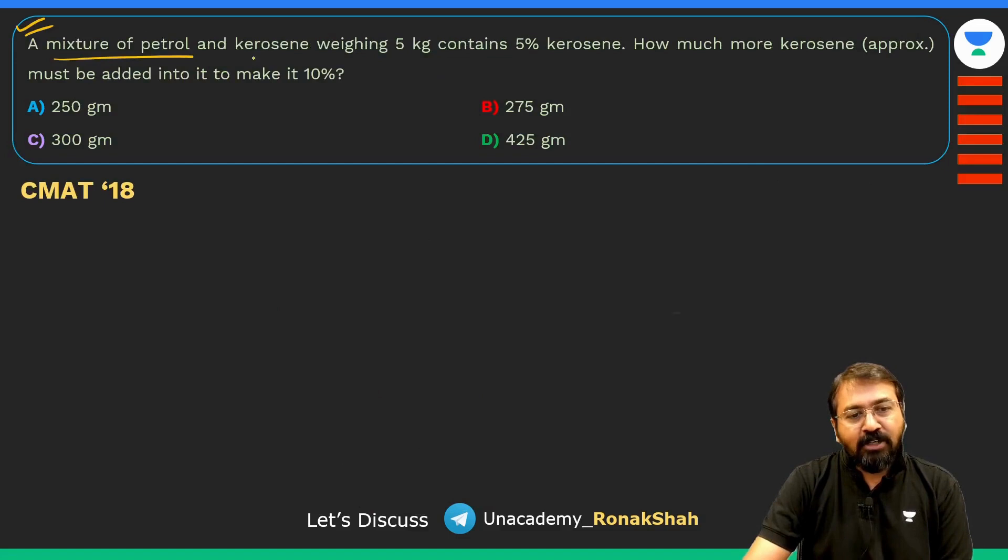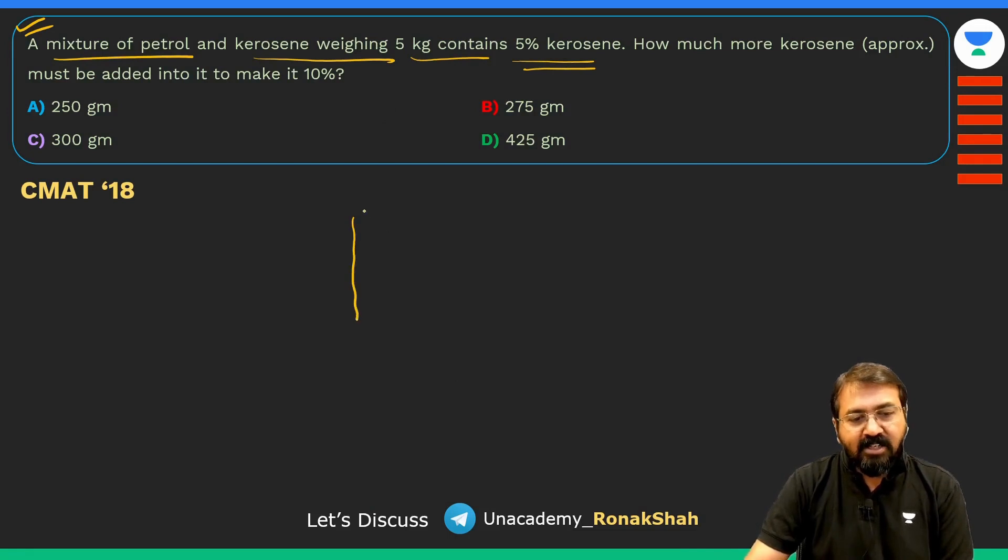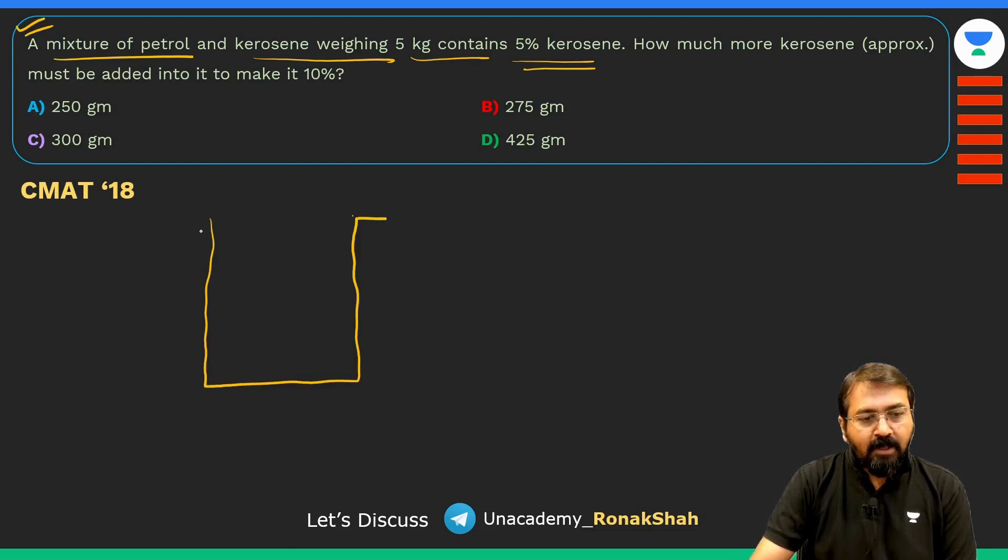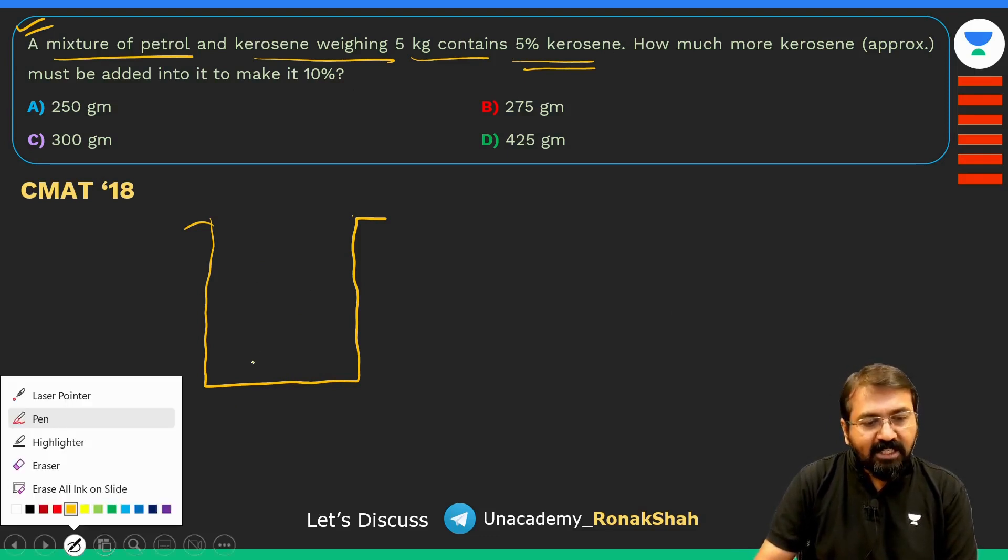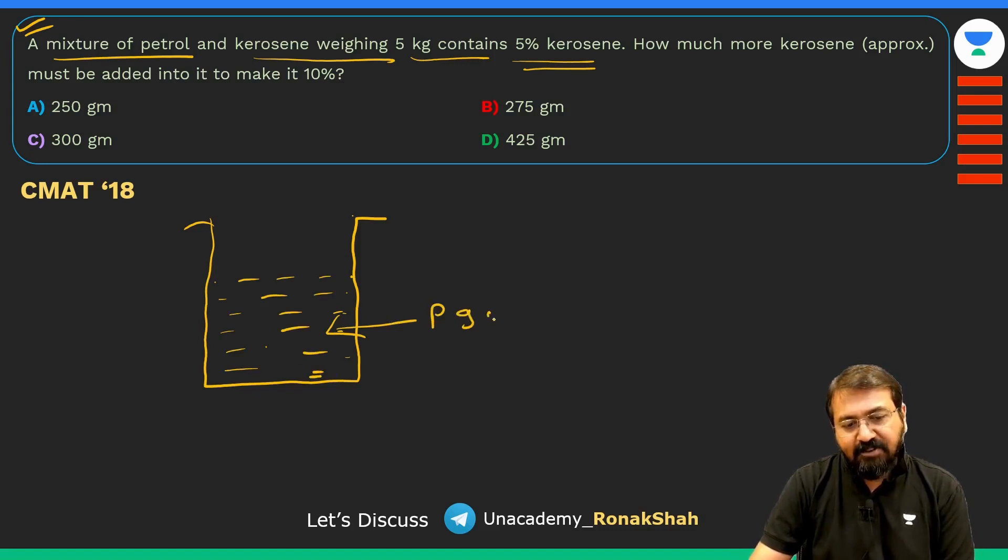Let's take a few more questions. Look at this question: a mixture of petrol and kerosene weighing 5 kg contains 5% kerosene. Let me represent it this way, so this is the container and it has 5% kerosene, so all remaining is petrol. We have 95% petrol and remaining kerosene. Let me indicate this is petrol which is 95%.